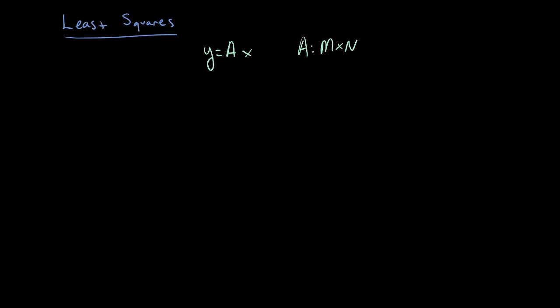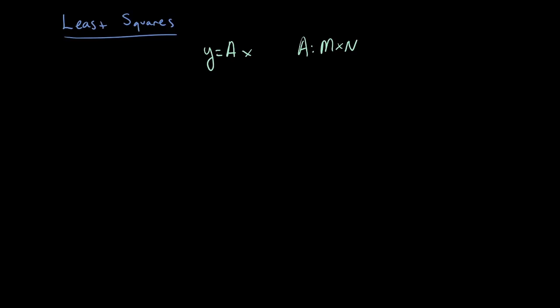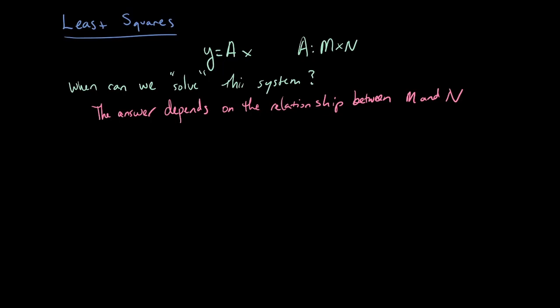We have a system y equals Ax and the question is when can we solve this system? When can we find an x given y and A? The answer depends on what you mean by solve and usually depends on the relationship between m and n. If m is less than or equal to n, this would be an underdetermined problem with fewer equations than unknowns. When m is greater than n, there's no guarantee there's even any x that will satisfy this equation.